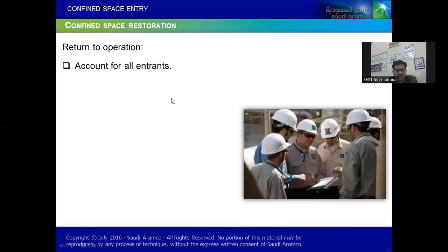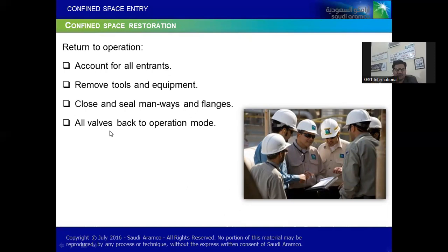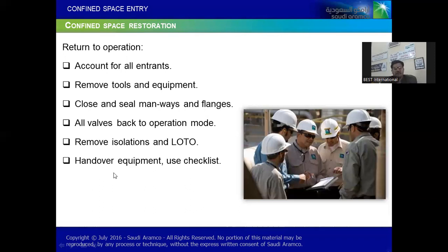Return to operation. Once job is done, now return to operation means account for all entrants, like headcount. Don't leave anyone to be inside. And on the other side, now remove tools and equipment, close and seal nozzles and flanges. All back to operation. Remove isolation and LOTO. And please don't forget any isolated point, because it's oil and gas industry. So make sure you remove all isolations and LOTO. And that is why something is better to prepare a list of locations, so where you have placed logs and tags and how many isolations are done and how many points are disconnected and how many blinds you have placed. The blind locations also are important to know down. And accordingly you have to remove your isolation of LOTO, hand out equipment, and use checklist.